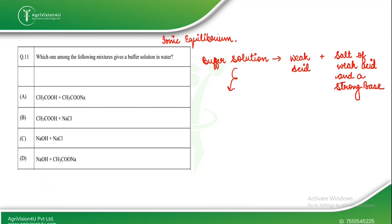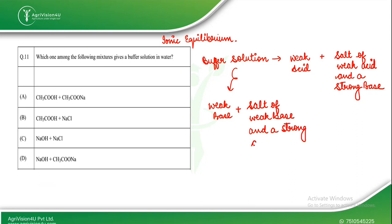Or a buffer solution can also be a weak base plus the salt of a weak base and a strong base. Looking at the compounds given: CH₃COOH is acetic acid, a weak acid. NaCl is a strong electrolyte dissociating into Na⁺ and Cl⁻. Sodium hydroxide is a strong base, so we eliminate those two options.